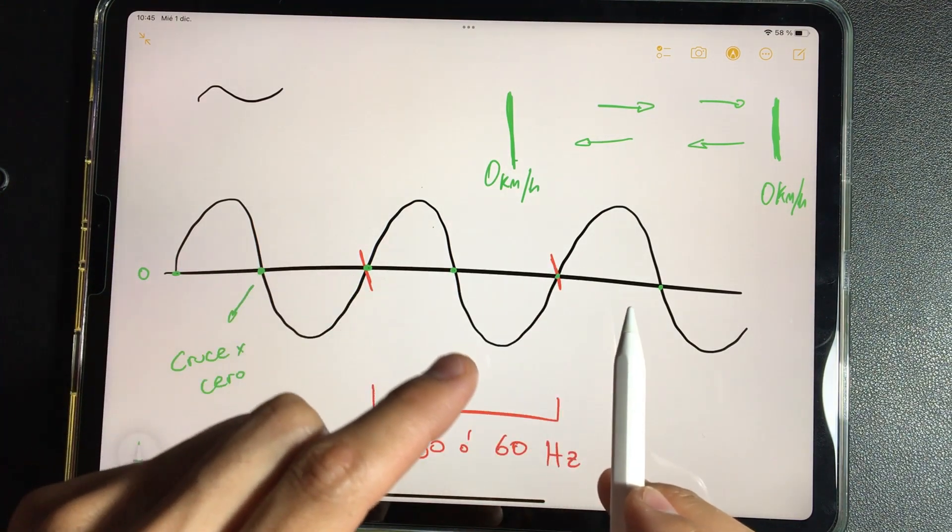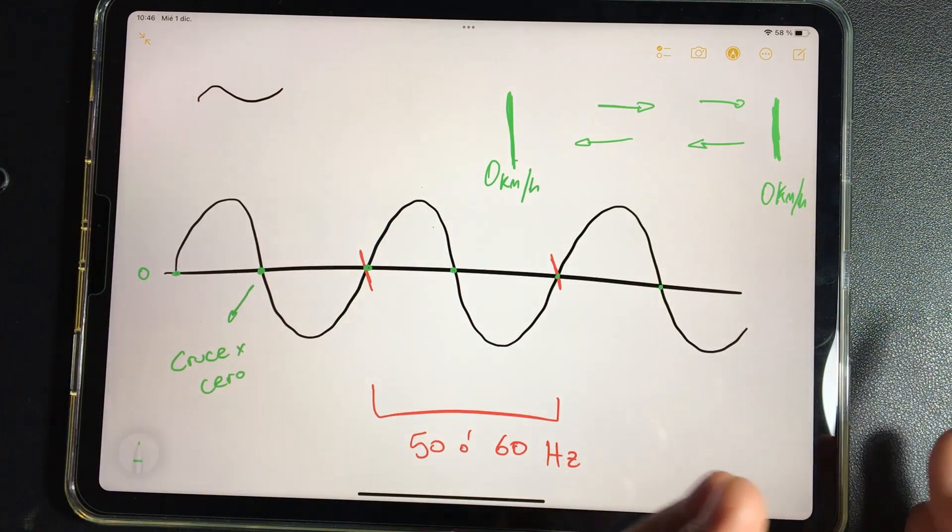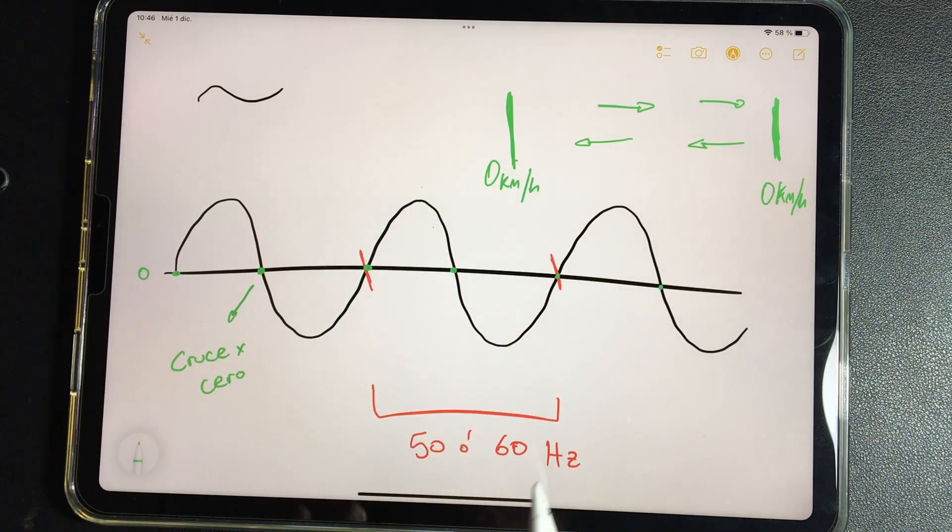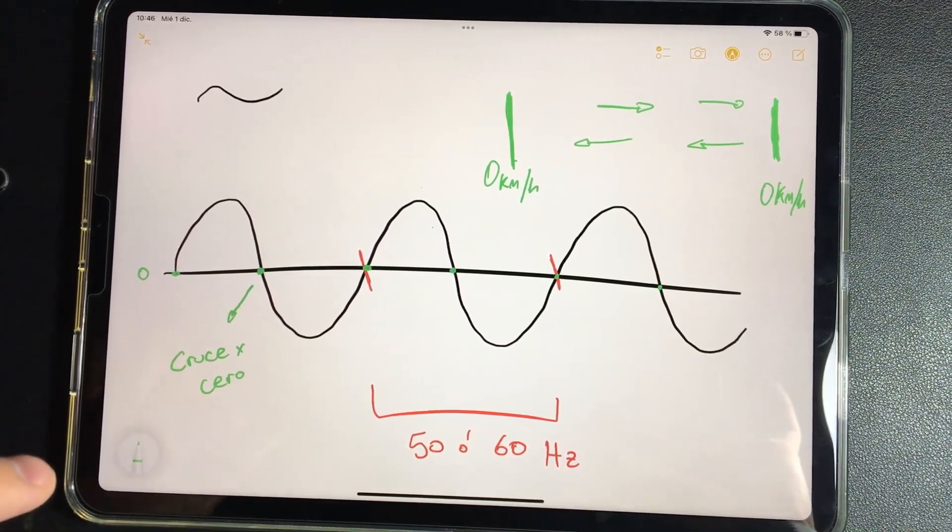What happens when I transform alternating current into direct current? Notice what happens when alternating current is converted to direct current. Let's move on to the other chart.